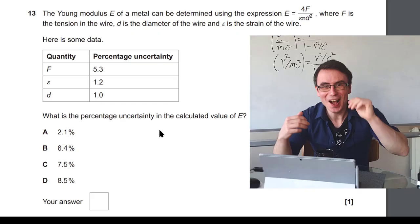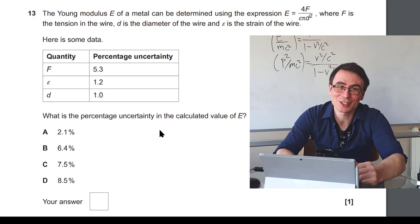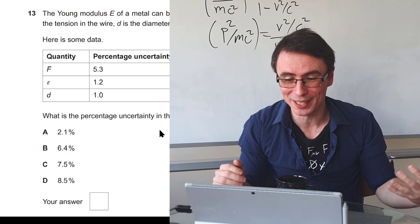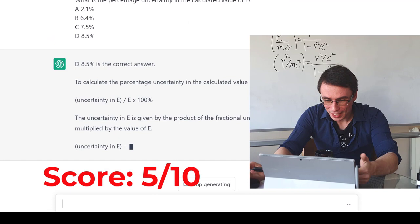Okay, this next question, I'll be very impressed if it manages to get it correctly. Adding up the rules of percentage uncertainties in experiments is quite tricky. Whoa, it's gotten this one correct. I'm genuinely impressed with this. It's also giving us the rule of multiplying fractional uncertainties.